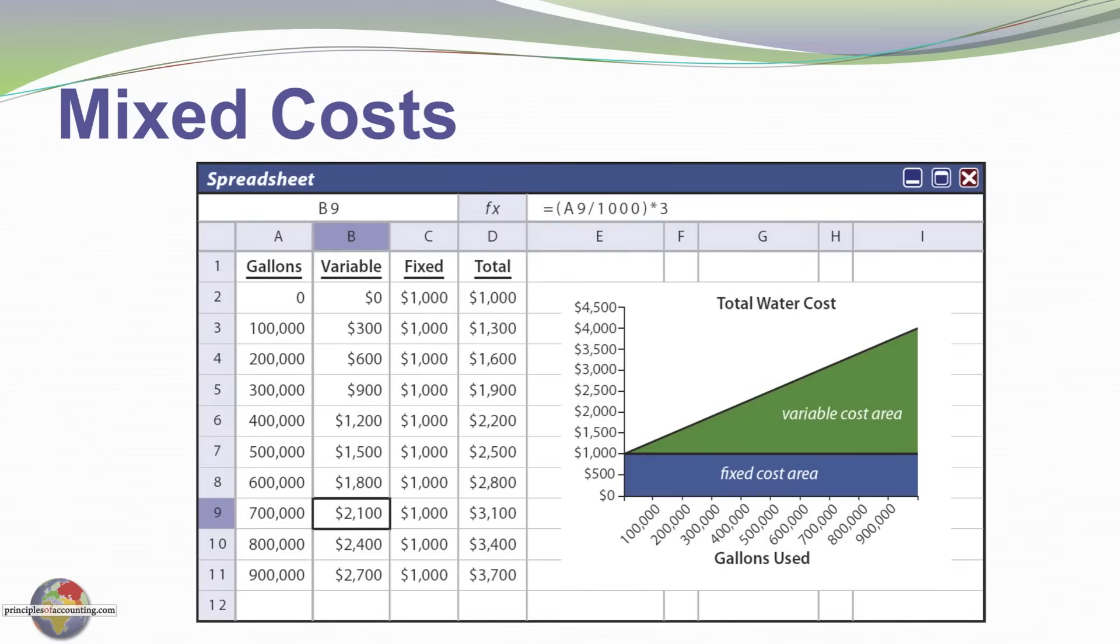And so if we were to look at this in spreadsheet form, in column A, I'm showing the gallons that could be used in a particular month. Column B is the variable cost that would be incurred. For example, on row 9, we can see $2,100. That's 700,000 gallons. So 700 times $3 or $2,100 would be the variable cost at that level of usage. The fixed cost, however, is $1,000 at each level of usage. And we have our total cost, the accumulation of columns B and C here.